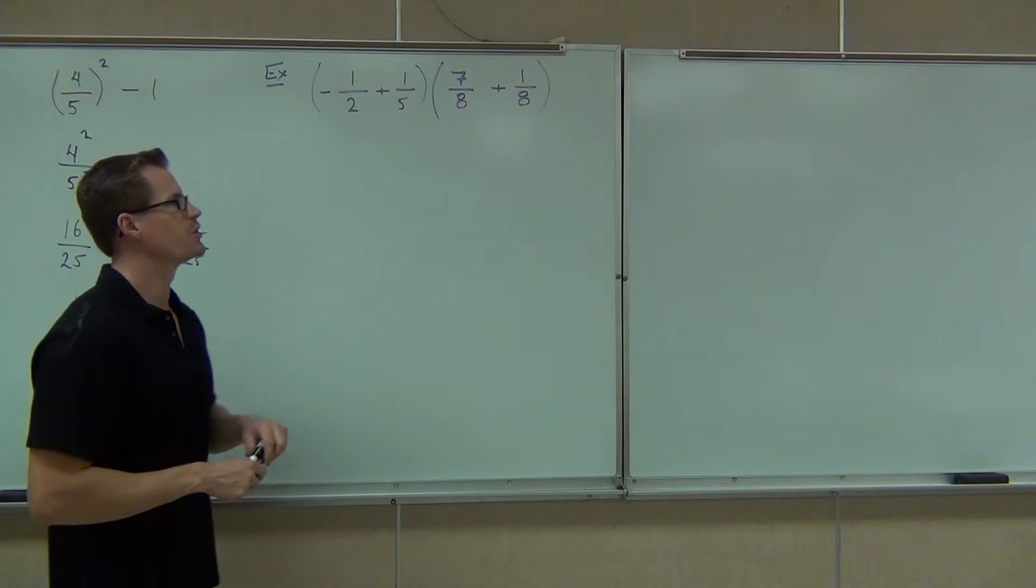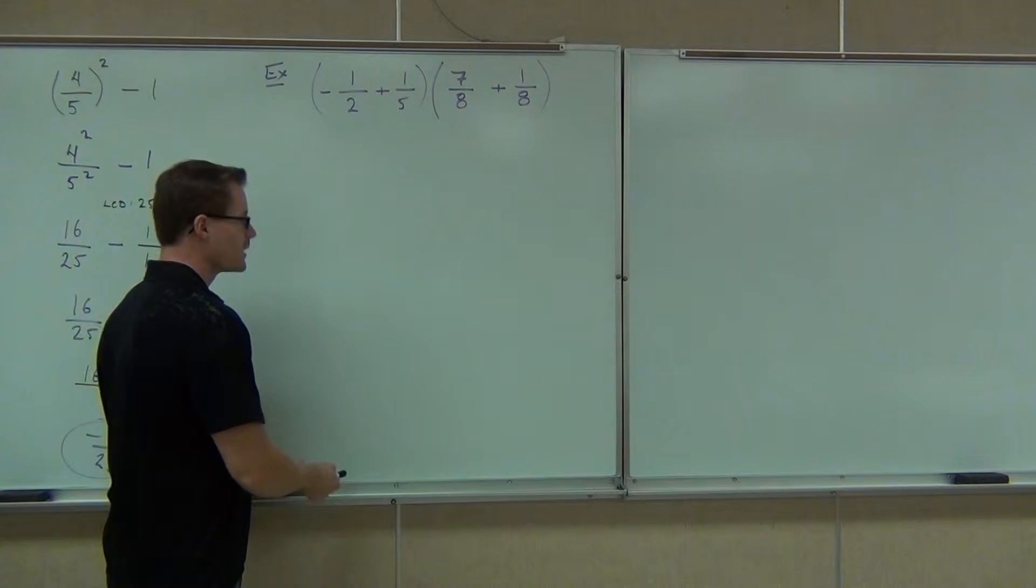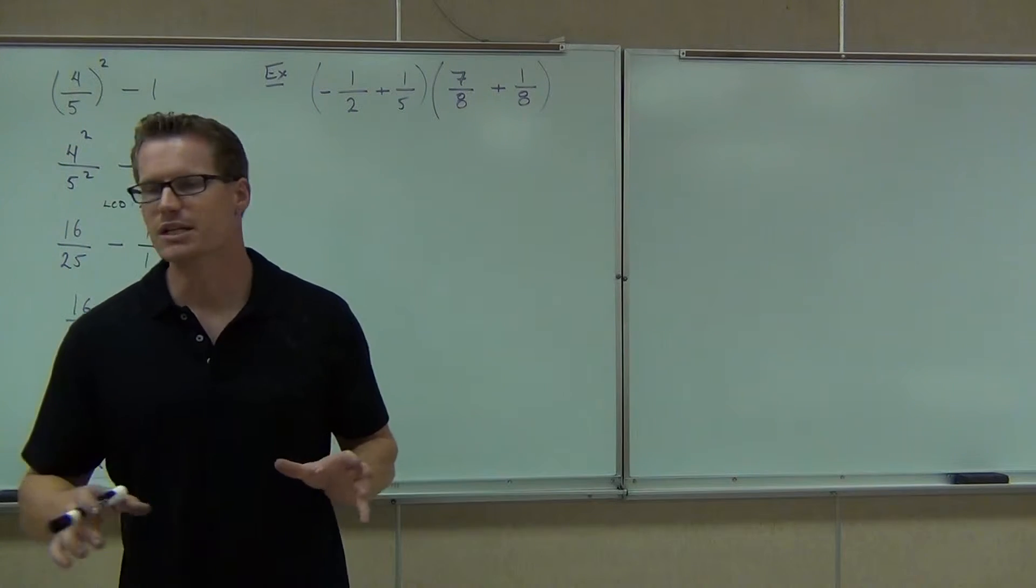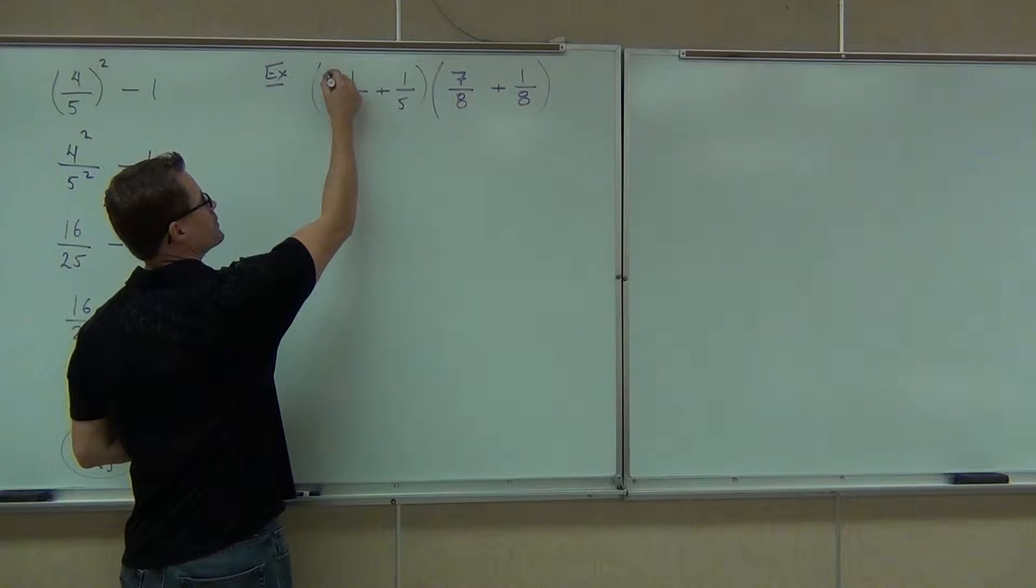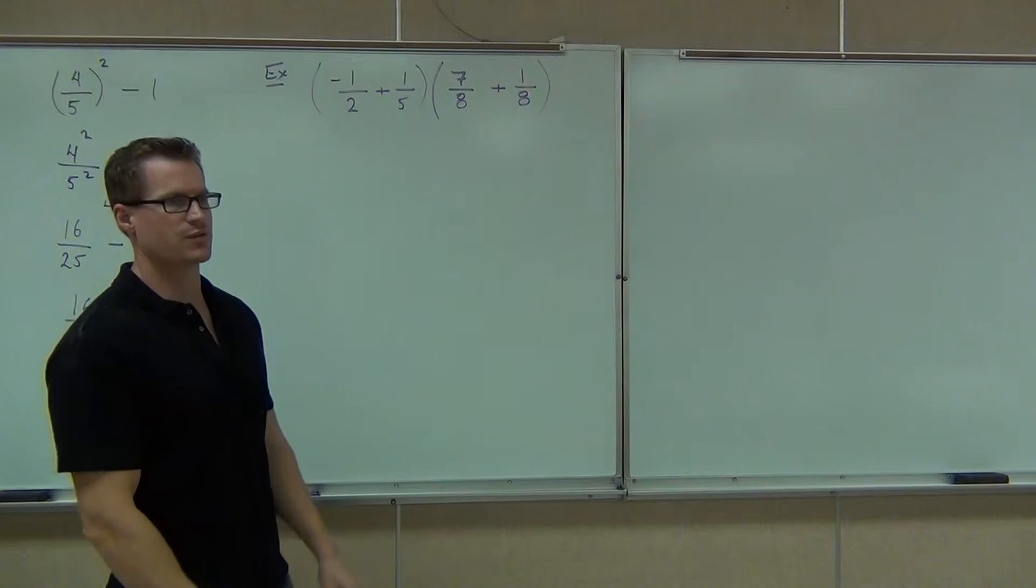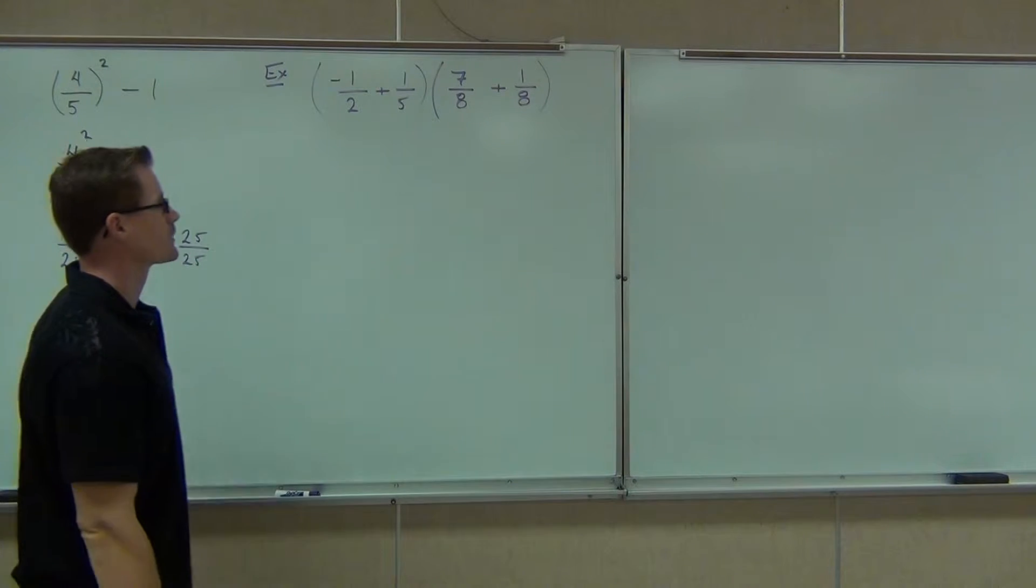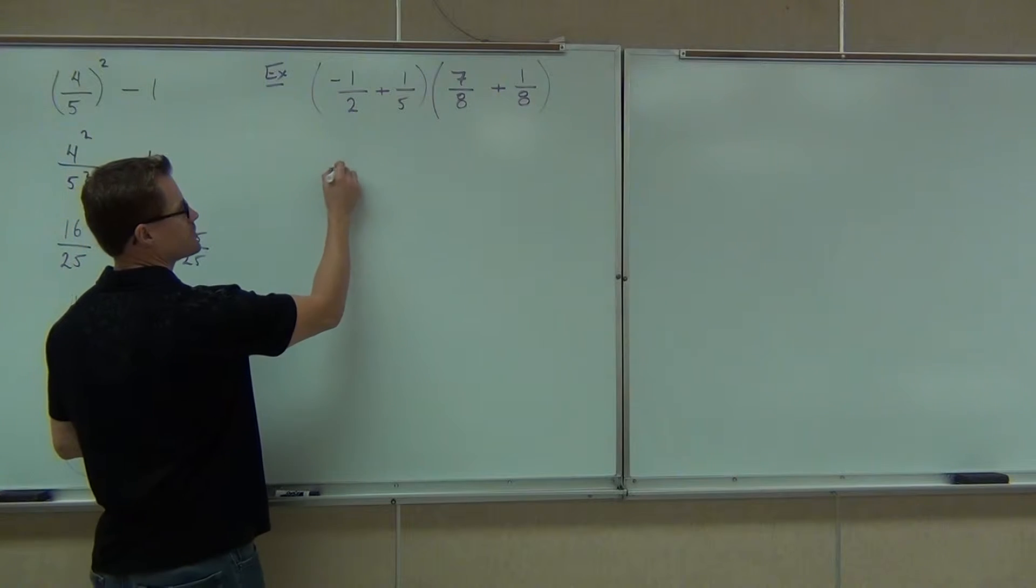Let's do this together. I'll give you one to do on your own after that. The first thing is we don't really want to have a negative in front of our fraction, it's just a little harder to deal with. So we're going to take that negative, move it to the top or numerator of our fraction. Instead of negative 1/2, we're going to have -1 over 2. After we move this, I'm going to rewrite it so you can see the steps.